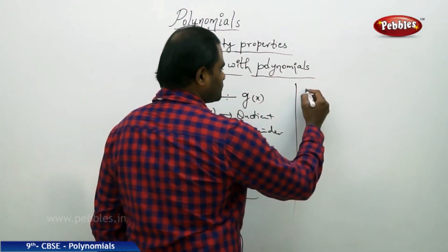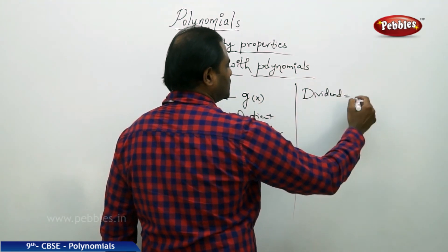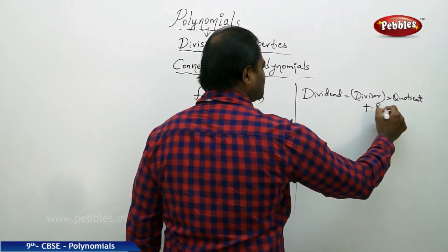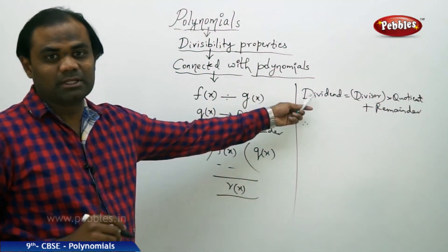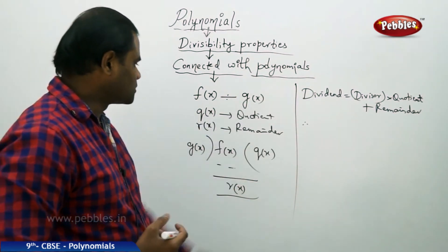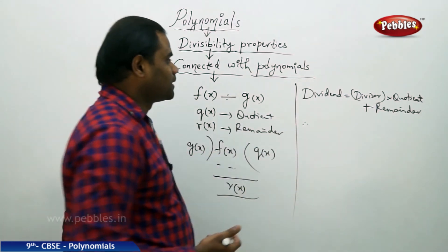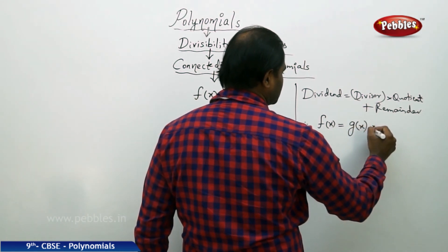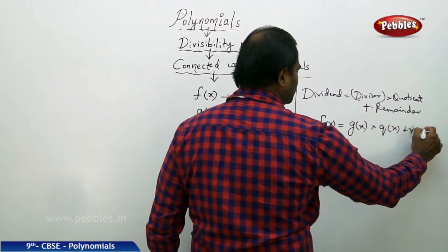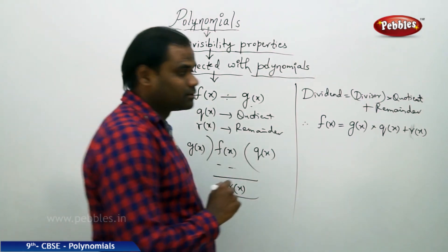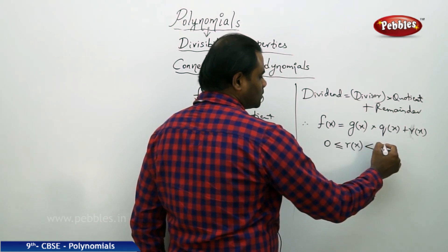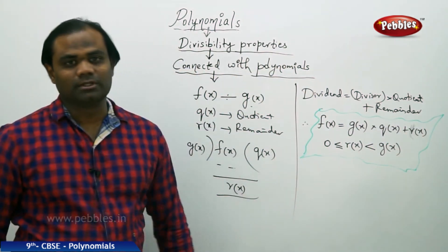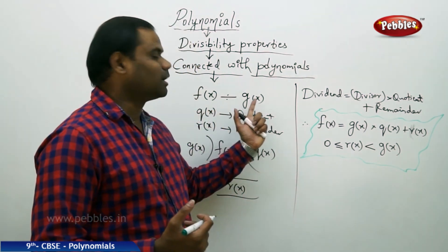The property says: dividend = divisor × quotient + remainder. Using this divisibility property — called the division algorithm — for polynomials: f(x) = g(x) × q(x) + r(x), provided that 0 ≤ degree of r(x) < degree of g(x). This is the division algorithm for polynomials f(x) divided by g(x).